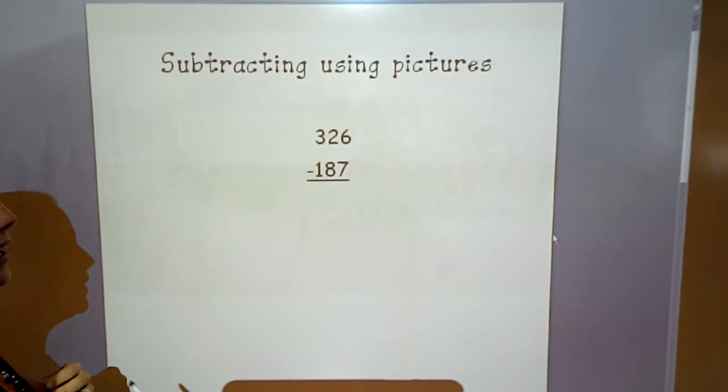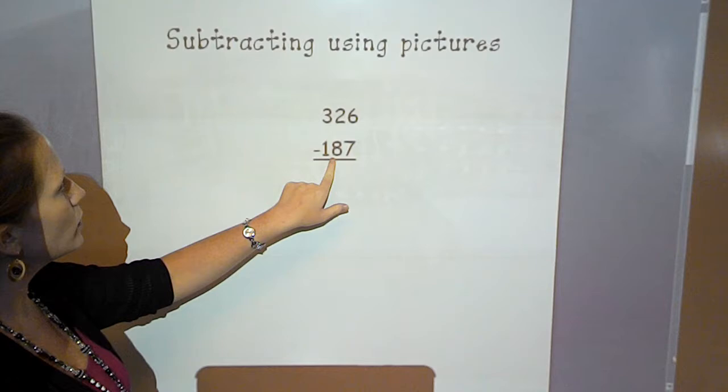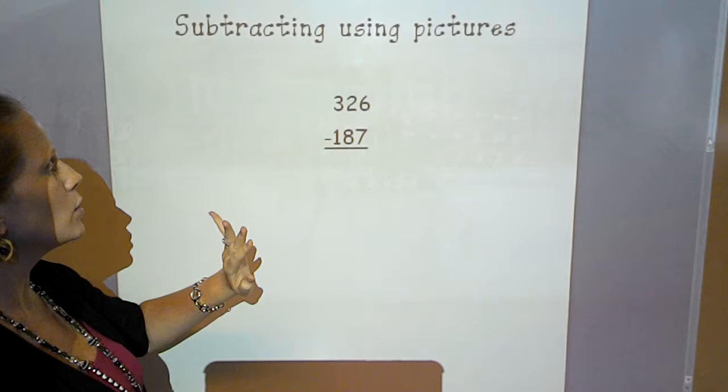We've been adding a lot using pictures. Now we're going to practice subtraction using pictures, and we're going to be drawing our base 10 pictures again. So our first problem is 326 minus 187. So we are starting with our total, and we're taking 187 away.